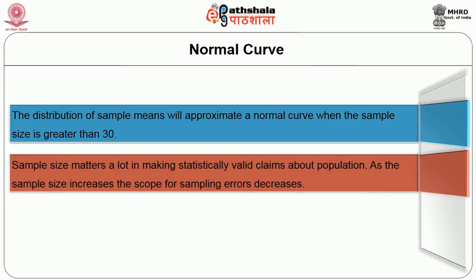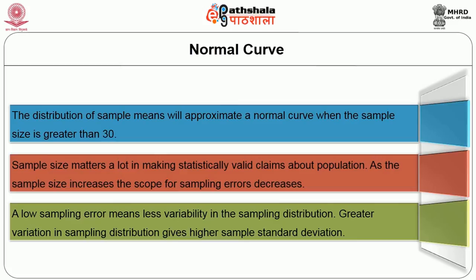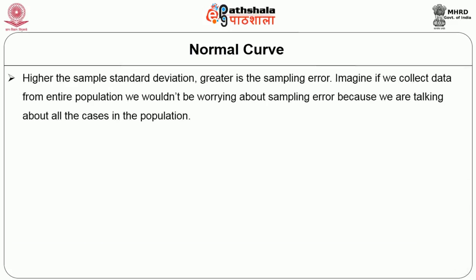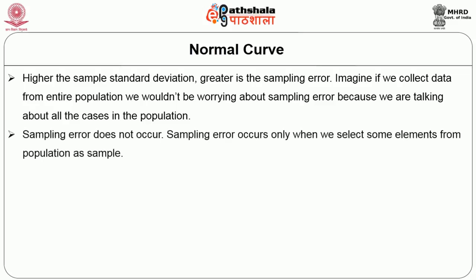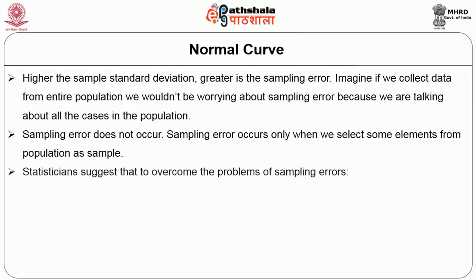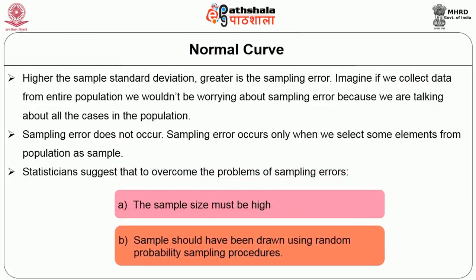Thus, sample size matters a lot in making statistically valid claims about the population. As the sample size increases, the scope for sampling errors decreases. A low sampling error means less variability in the sampling distribution. Greater variation in sampling distribution gives higher sample standard deviation, and higher standard deviation means greater sampling error. If we collect data from the entire population, there is no sampling error. Sampling error occurs only when we select some elements from the population as a sample.